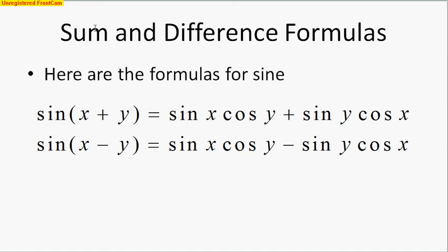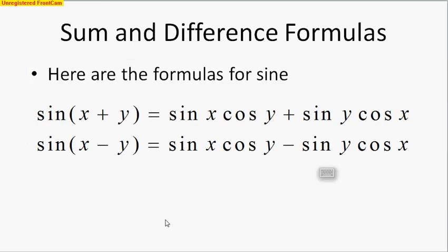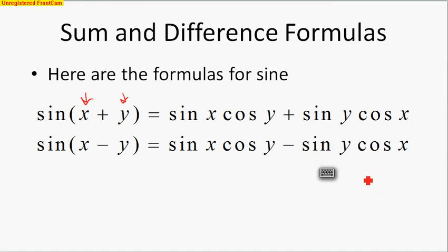Here are the ones for sine — make sure you get these written down. Sine of x plus y equals sine of x times cosine of y, plus sine of y times cosine of x. Notice that x and y are the different angles. For sine of subtraction, we get sine of x cosine of y minus sine of y cosine of x. Both formulas have sine x cosine y in front and sine y cosine x in the back — what matters is the sign in between.